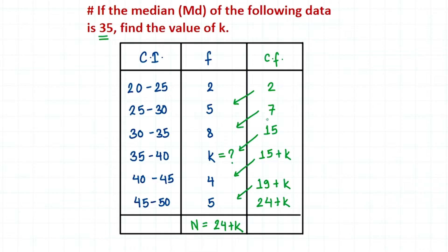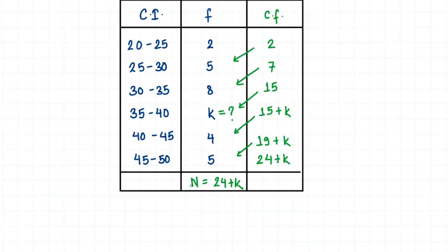Now we have filled up our cumulative frequency. Usually when doing problems related to median, the first step is to find the position of the median. But in this particular case we already know that our median is 35, which is given in our question. So we don't need to find the position of the median.